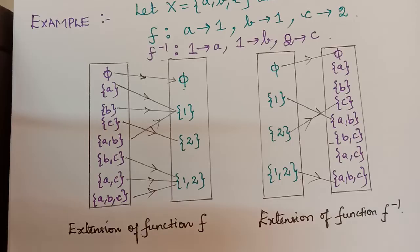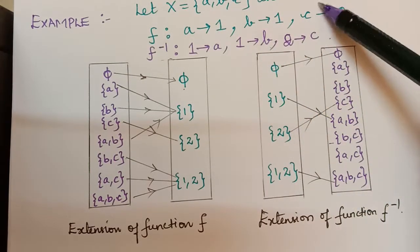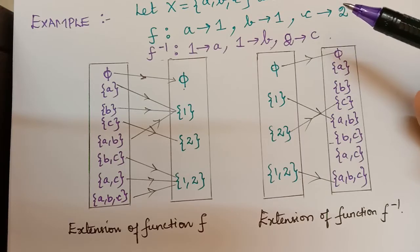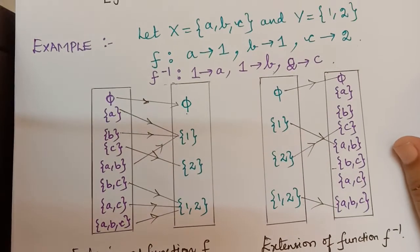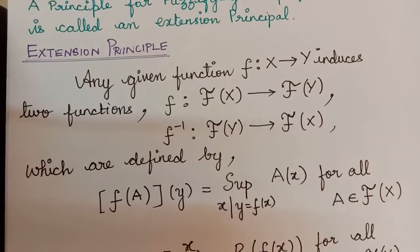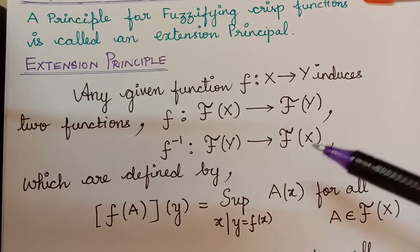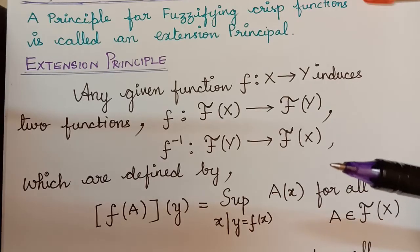This process — this extension principle — fuzzifies the crisp functions X and Y. So the process of fuzzifying the crisp functions is known as the extension principle. Hope you have understood the concept of the extension principle. In our next video, we will be proving a theorem which will explain the properties of the extension principle. Thank you.